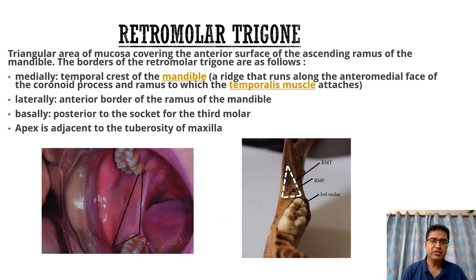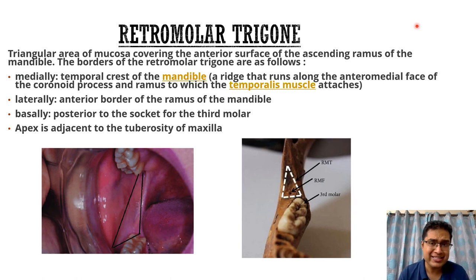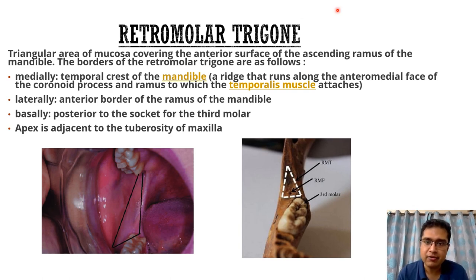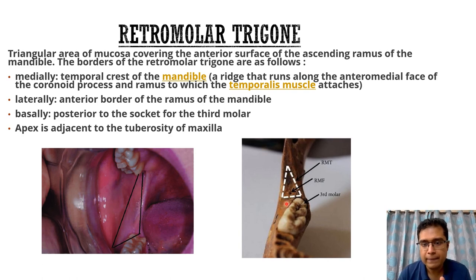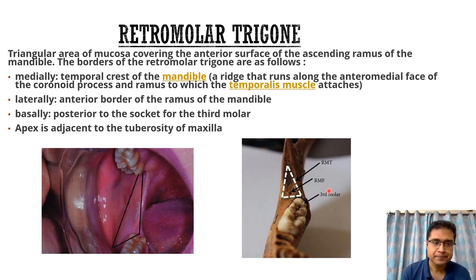Coming to a very important space in the oral cavity with significant clinical significance — whenever you report a case of oral carcinoma, you have to mention the retromolar trigone. What exactly is the retromolar trigone, and why is it called a trigone? It is actually a triangular area of mucosa covering the anterior surface of the ascending ramus of the mandible. These two pictures give you a better idea as to where exactly this retromolar trigone lies.